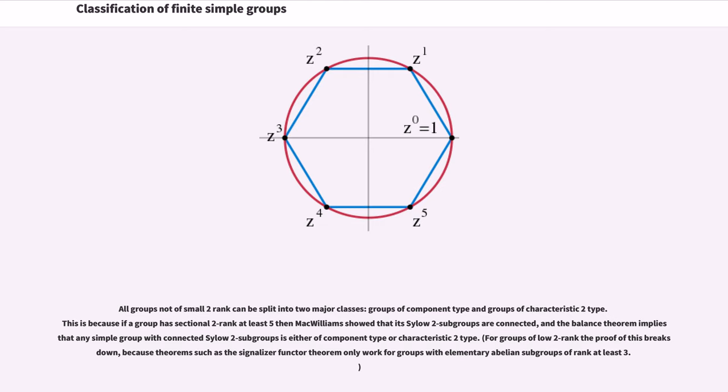All groups not of small two-rank can be split into two major classes: groups of component type and groups of characteristic two type. This is because if a group has sectional two-rank at least five, then its Sylow two-subgroups are connected, and the balance theorem implies that any simple group with connected Sylow two-subgroups is either of component type or characteristic two type. For groups of low two-rank, the proof of this breaks down because theorems such as the signalizer functor theorem only work for groups with elementary abelian subgroups of rank at least three.